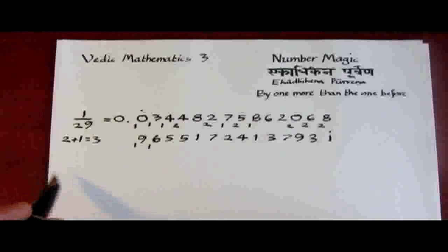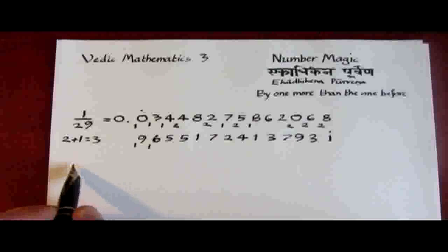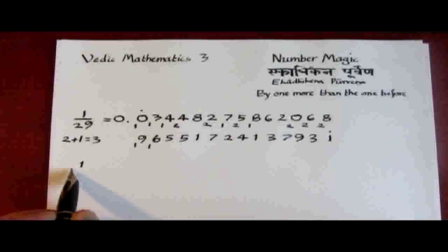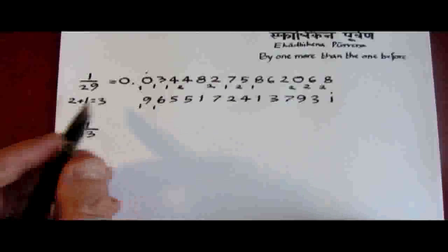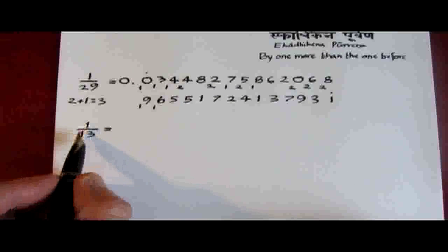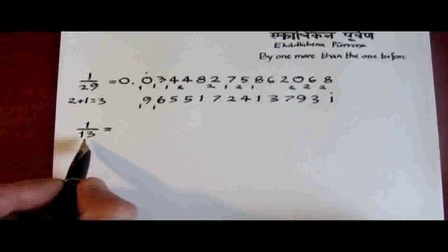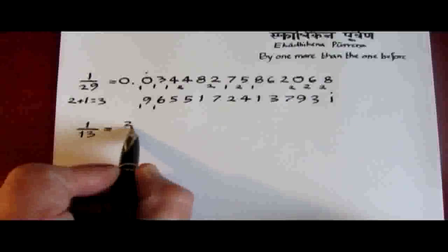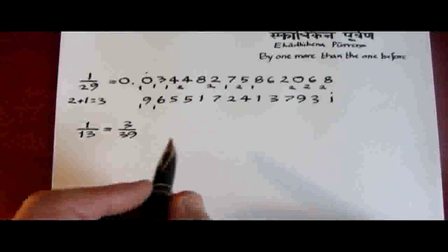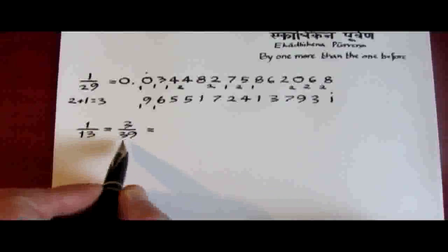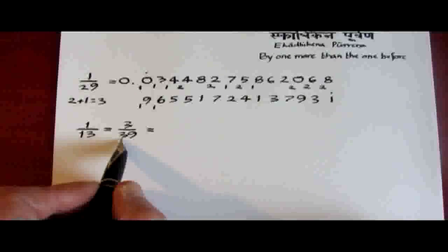We can extend this to fractions like 1 thirteenth. And 1 thirteenth, we can, using our knowledge of equivalent fractions, express it as 3 over 39. And so, in this case, our divisor is 1 more than this 3, which is 4.